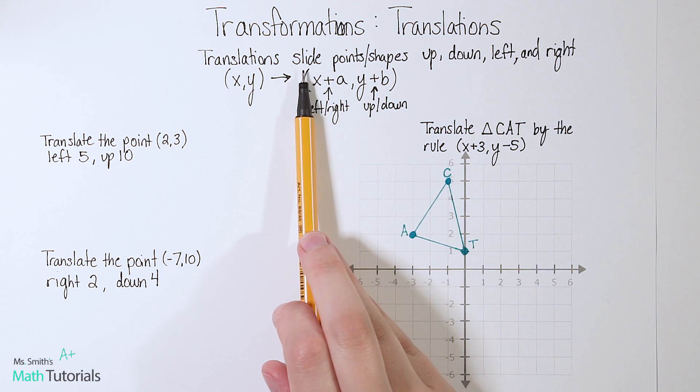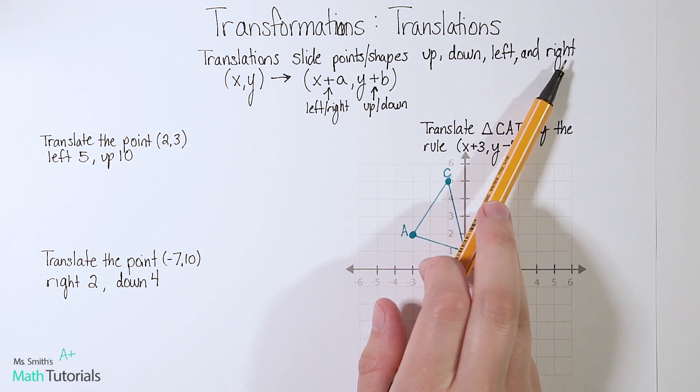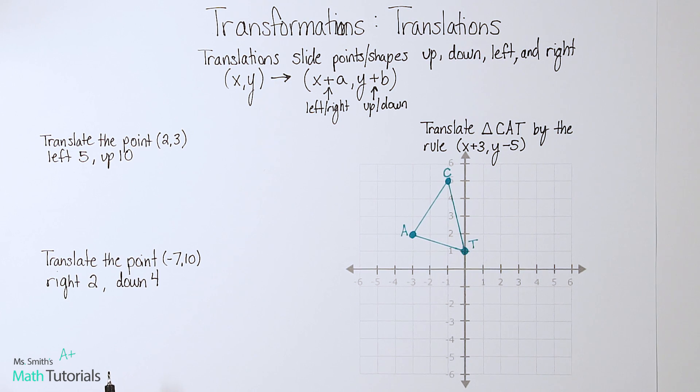Translations slide either points or shapes up, down, left, and or right. So it just slides a shape in various directions.